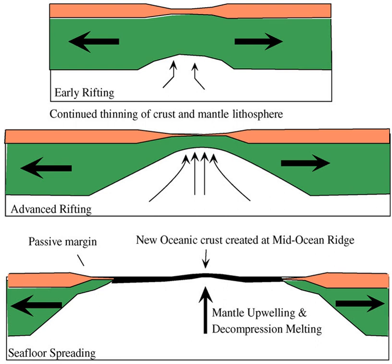Passive margins are important exploration targets for petroleum. One classification of 592 giant oil fields into six basin and tectonic setting categories noted that continental passive margins account for 31% of giants. Continental rifts contain another 30% of the world's giant oil fields. Basins associated with collision zones and subduction zones are where most of the remaining giant oil fields are found.